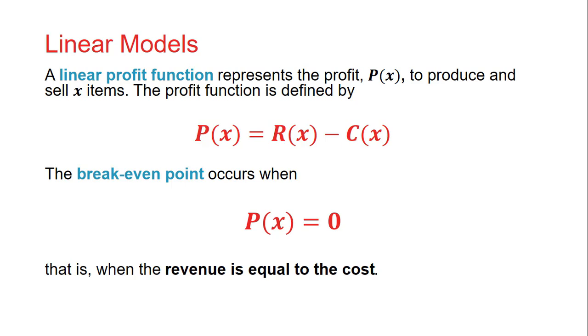A linear profit function represents the profit P(x) to produce and sell x items. The profit function is defined by P(x) = R(x) - C(x). The profit is our revenue minus our cost. All the money we bring in, we have to take care of all our expenses, and what's left over is the profit. The breakeven point occurs when profit equals zero, which is when revenue equals cost.